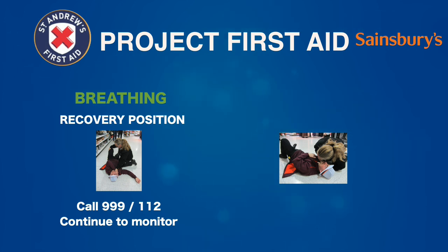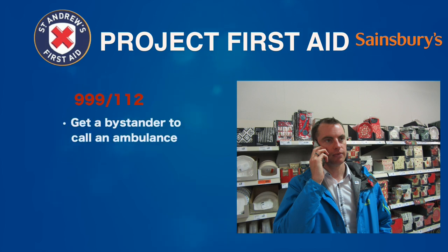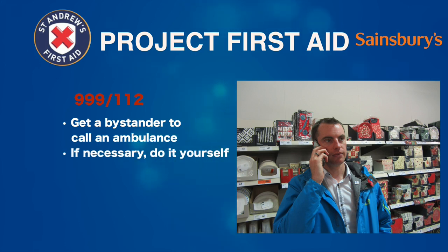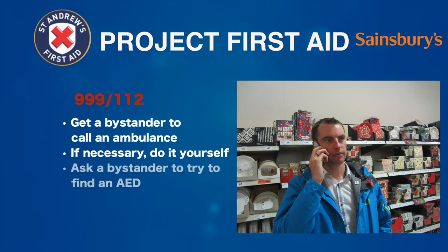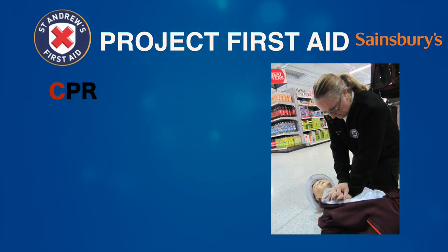If the casualty is not breathing, ask your helper to call 999 or 112 and ask for an ambulance. Tell the emergency services that you have an unconscious casualty who is not breathing. Tell them where you are and answer any questions they ask. Then ask your helper to try to find an AED or defibrillator — usually found in public places such as shopping centres or railway stations. Some schools and universities may also have defibrillators. Then begin CPR — letter C.